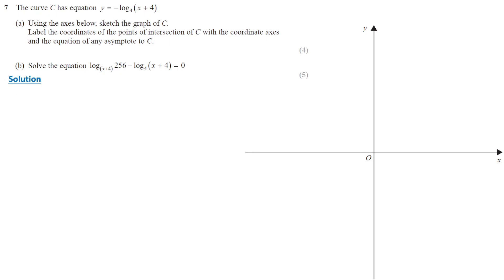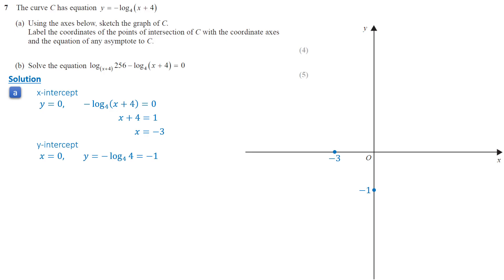To sketch the graph of this logarithmic function, we first find the intercepts and asymptote. When y equals 0, the logarithmic function is 0, which happens when x + 4 equals 1, giving x equals negative 3. So the x-intercept is negative 3. When x equals 0, y equals negative log base 4 of 4 equals negative 1. So the y-intercept is negative 1. Since the argument must be positive, x must be greater than negative 4, so the vertical asymptote is x equals negative 4.